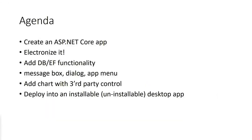So the agenda for this tutorial is to create an ASP.NET Core app, electronize it — in other words, run it as a desktop application under the Electron framework — and later on we're going to add some database Entity Framework functionality, use some of the APIs that Electron.net provides to create message boxes, dialogs, and app menus. We will also add a chart with a third-party control, and eventually deploy our Electron application as a desktop application that can be installed and uninstalled.